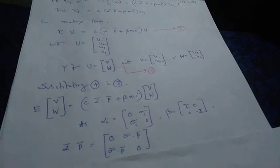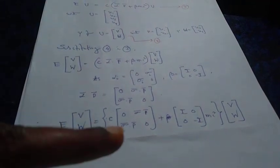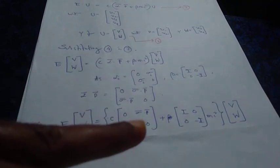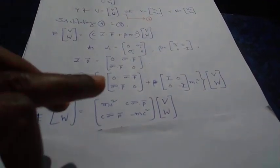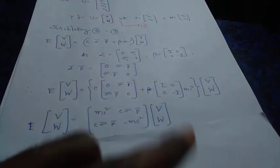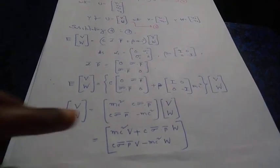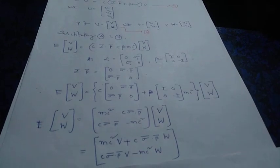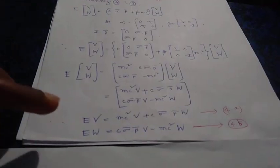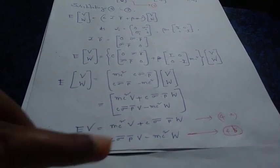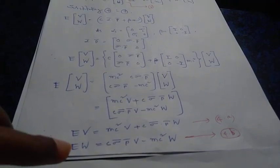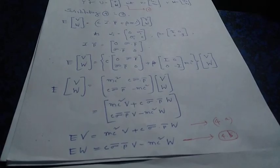Taking the form for alpha·P and beta and substituting into the equation, the first term with c times alpha·P plus beta times mc² operates on the column matrix of V and W. The left-hand side remains as is, and on the right-hand side, after addition of matrices multiplied with mc², we perform the two by two matrix multiplication on the column matrix. Comparing column matrices on both sides, we write E·V equals this expression, called equation 4a, and E·W equals the other expression, called equation 4b.